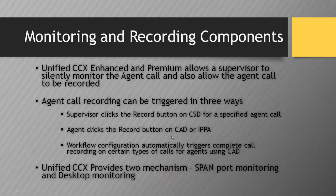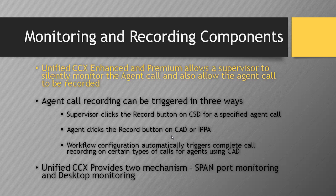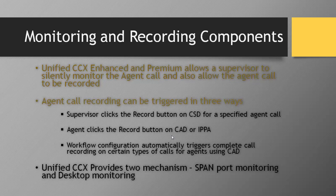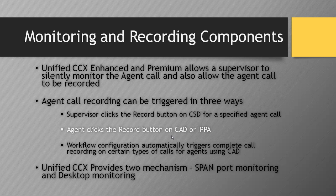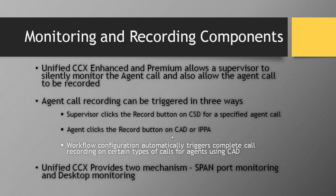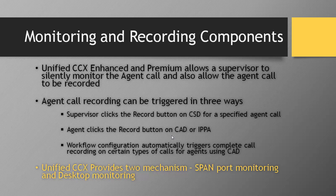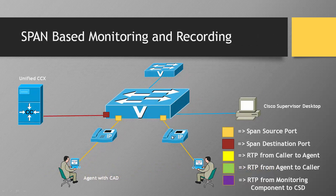In this section, we are going to discuss about the monitoring and recording components of UCCX. Cisco Unified CCX enhanced and premium packages allow the supervisor to silently monitor agent calls and also allow agent calls to be recorded. The agent call recording can be triggered in three different ways: the supervisor can click the record button on the Cisco supervisor desktop, the agent himself can click the record button on the Cisco agent desktop or IP phone agent service, or as an administrator we can configure workflows through Cisco administration desktop to automatically trigger complete call recording.